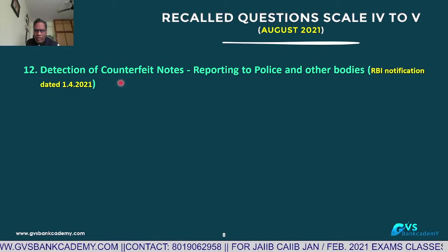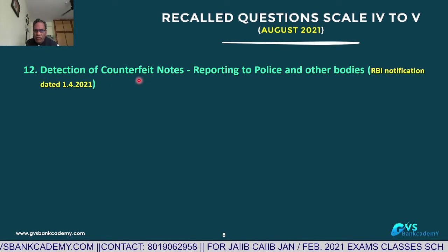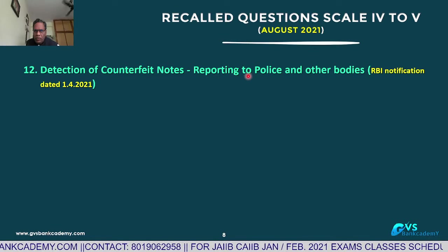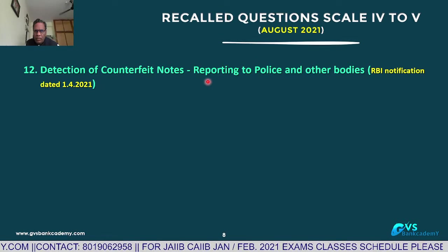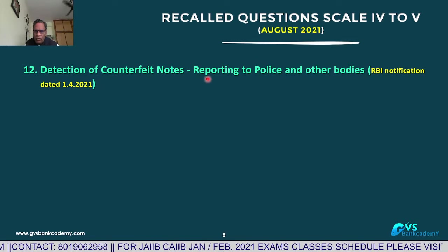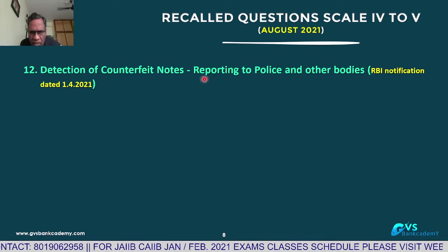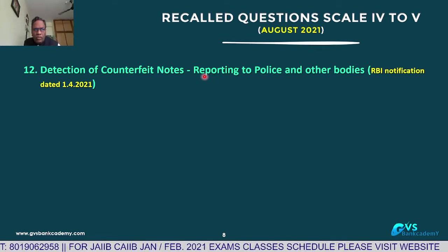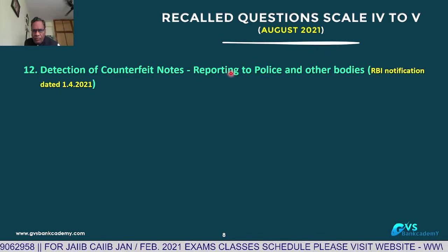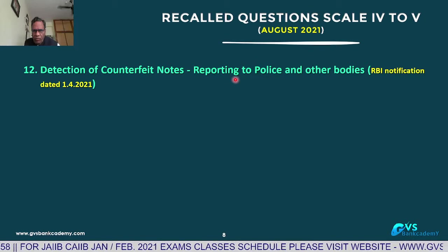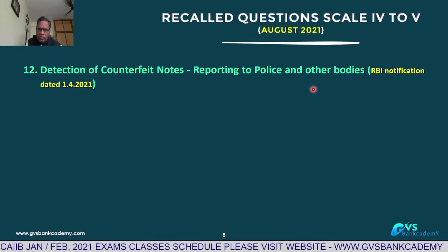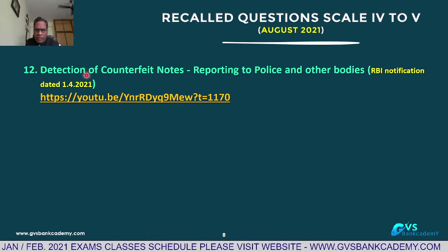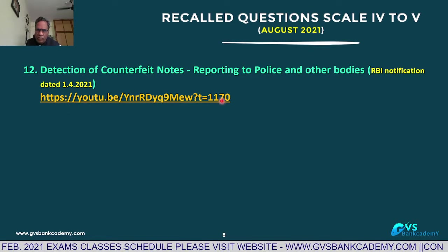Q12: Detection of counterfeit notes — reporting to police and other bodies. For counterfeit notes up to four in a single transaction, file a monthly consolidated report to police authority through the nodal officer of the bank. For five and above in a single transaction, the bank must immediately file an FIR through the bank nodal officer to police authorities.